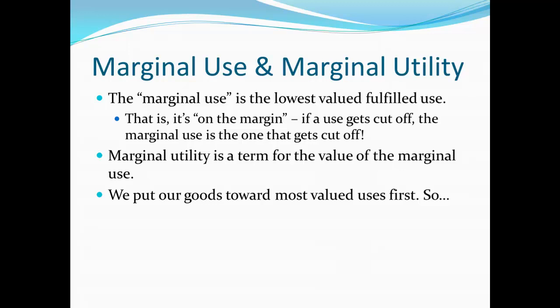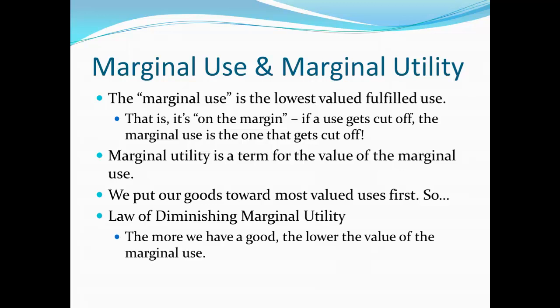We put our goods toward the most valued uses first. This is very sensible. So if I only have one pair of socks, I'm going to wear them. If I have two, I'm going to wear one pair and wash a second pair. So the most valuable uses get fulfilled first, then I can move down the list. Now that's going to imply what we call the law of diminishing marginal utility — the more we have of a good, the lower the value of the marginal use is going to be. If I only have one unit, it goes toward the most valuable thing I can do with it. If I have two units, the marginal use is a little bit less valuable. It's not because the value of the marginal use changed — it's because the marginal use itself changed. If I have just one pair of socks, the marginal use is wearing them. If I have two pairs, the marginal use is washing a pair. So the value of the marginal use falls the more of the good we have.